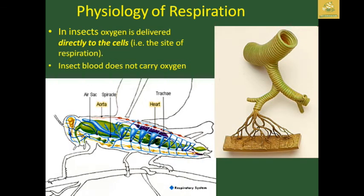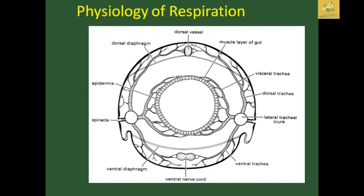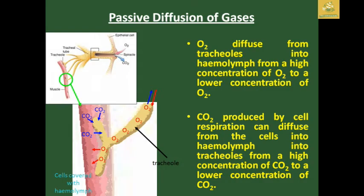Regarding the physiology of respiration in insects: oxygen is directly dissolved into the cells from the site of respiration, so insects do not need to carry oxygen via blood for respiration. The dorsal vessel and multilayered cuticle are present, with the tracheal trunk connected and spiracles opening to allow blood to receive oxygen from outer space. The spiracles, lateral trunk, visceral trachea, and dorsal trachea are used to absorb air, and the tracheal-tissue interface is established in the insect body.